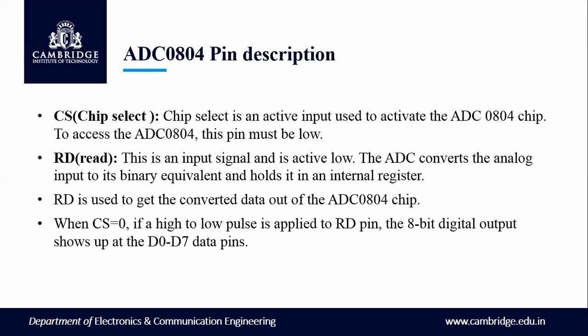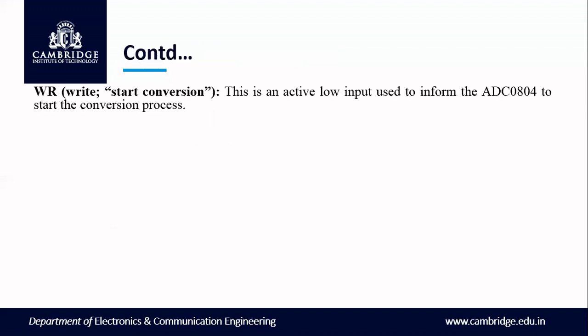When CS is 0, if a high to low pulse is applied to the RD pin, you are able to read the data. The 8-bit digital output shows up at the D0 to D7 data pins so that you can read the value. This RD pin can also be called output enable.